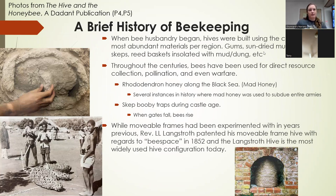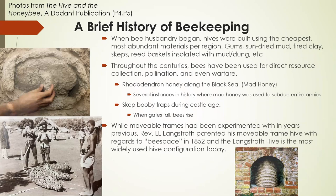Hives are built on the cheapest materials available. It seems really expensive today but they're still trying to use cheaper materials. You can see hives today made out of plastics, wood, all sorts of different things. Historically, gums — sections of tree where hives have made their home — have been used, along with sun-dried mud containers, fired clay, reed skep baskets, even fishing baskets. These old fishing baskets were turned into honeybee hives and insulated with mud, dung, or straw. The bees will basically live in anything.